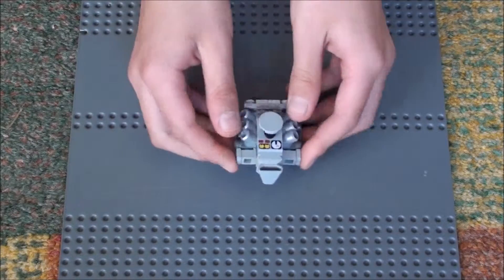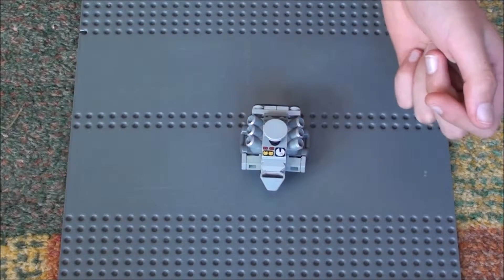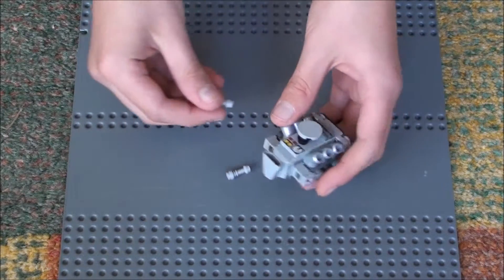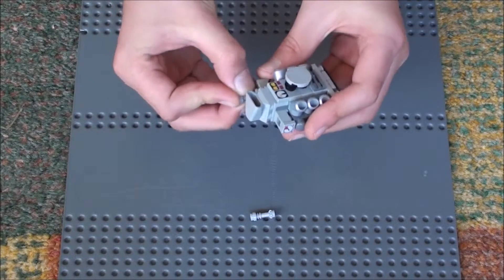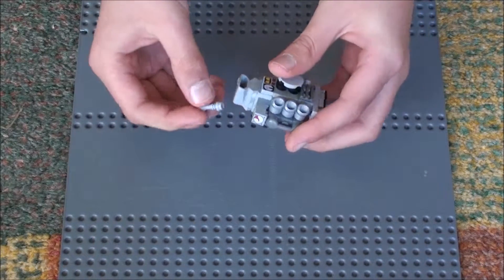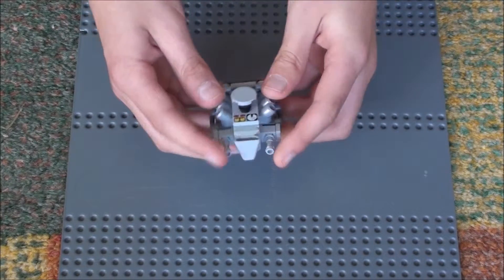And then you get the 2 lightsaber hilts and put them in the headlight bricks like that.